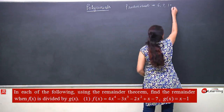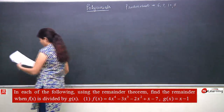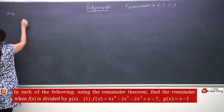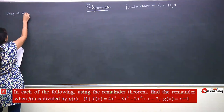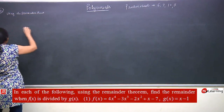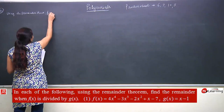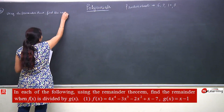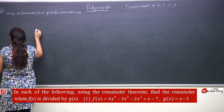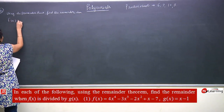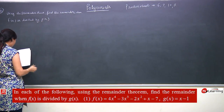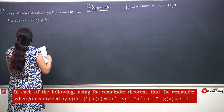Coming to question number 11, the question is: using the remainder theorem, find the remainder when f(x) is divided by g(x). That means we divide one polynomial by another polynomial and check what the remainder will be.